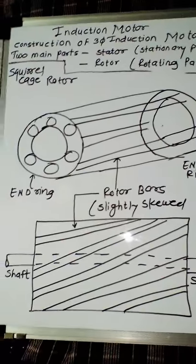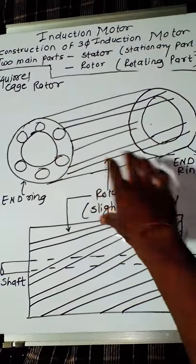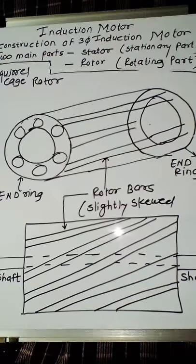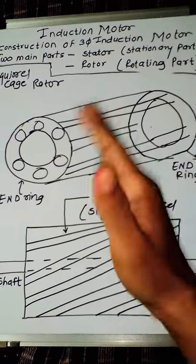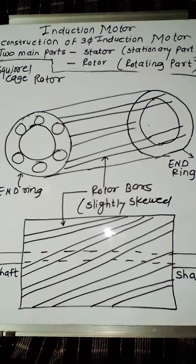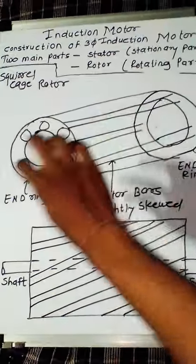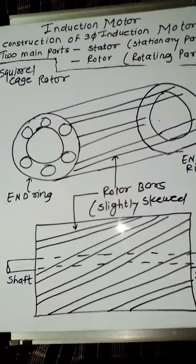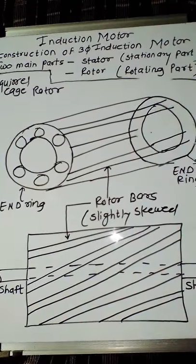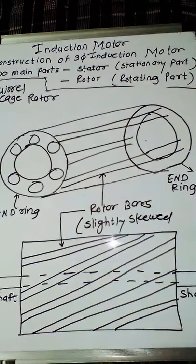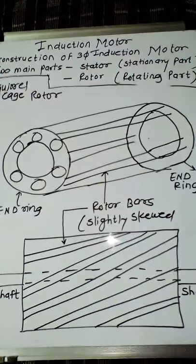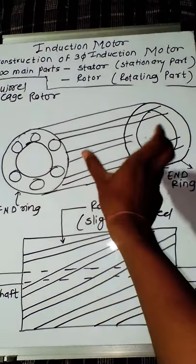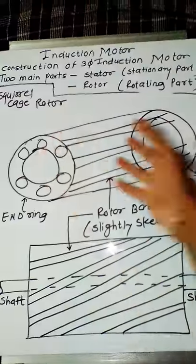The squirrel cage rotor consists of a cylindrical laminated core, as you can see in this diagram. The laminations are insulated from each other by means of varnish, and these laminations are slotted to carry the rotor bars. In the squirrel cage rotor there is no rotor winding — instead there are rotor bars made of copper, aluminum, or alloy. These bars are placed in the rotor slots and form the rotor winding.